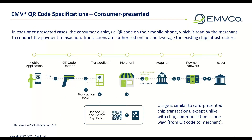Let's look at the consumer-presented specifications. They operate in a similar way to card-presented chip transactions, except, unlike with chip, communication is one way — from the QR code to the merchant. The consumer displays a QR code on their mobile phone, which is read by the merchant to conduct the payment transaction. Transactions are authorised online and leveraged to the existing chip infrastructure to complete the transaction quickly and securely.